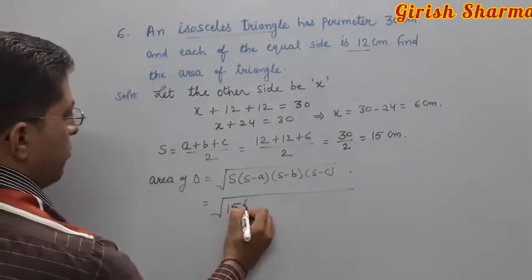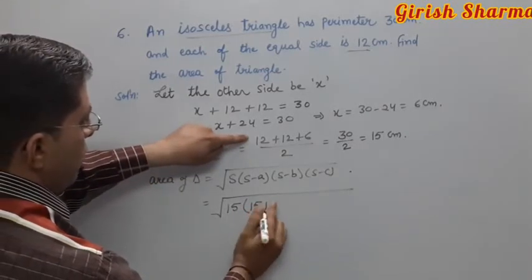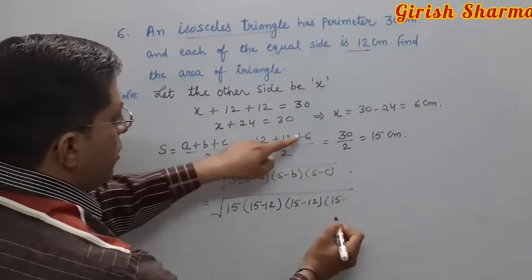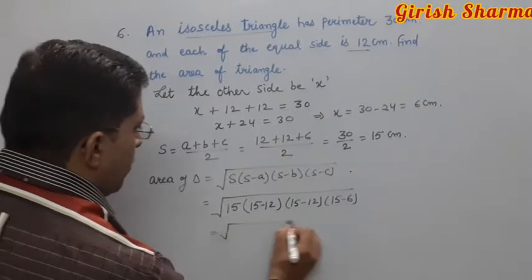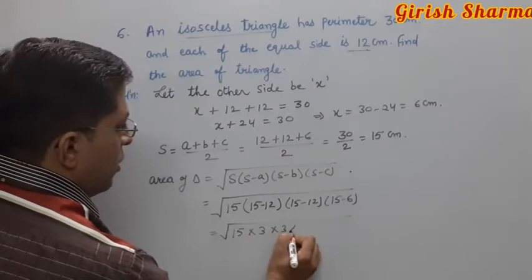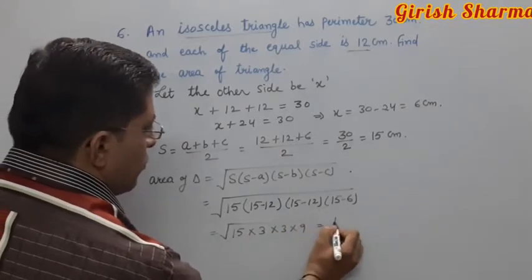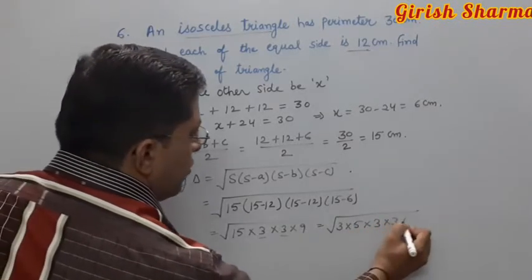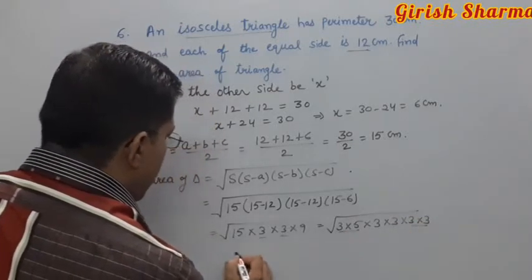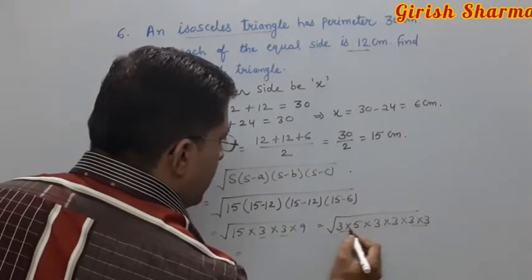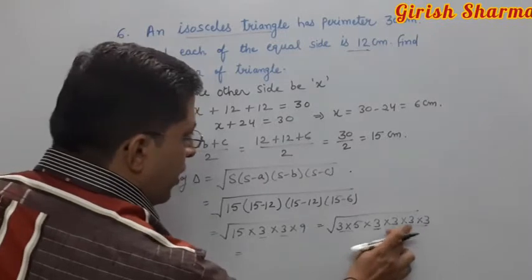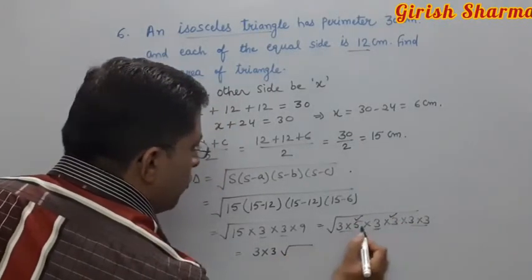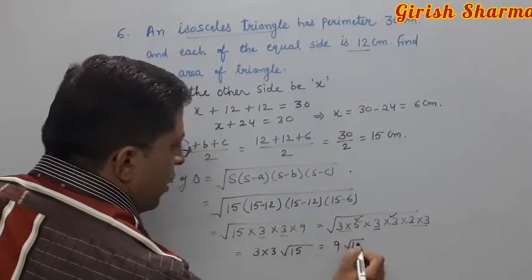Substituting values: s is 15, s minus 12 equals 3, again s minus 12 equals 3, and s minus 6 equals 9. So under root of 15 times 3 times 3 times 9. Prime factorization gives 3 times 5 times 3 times 3 times 3 times 3. Pairing: we get 3 squared times 3, and unpaired 5 gives 9 root 15. Area equals 9 root 15 centimeters squared.